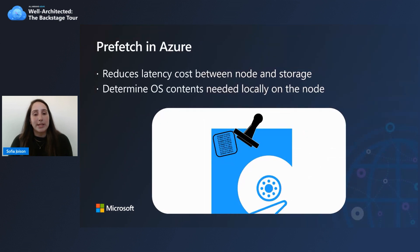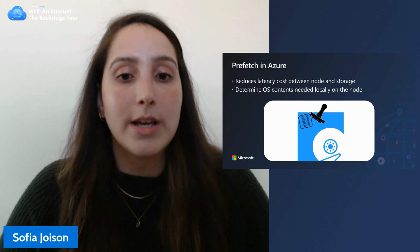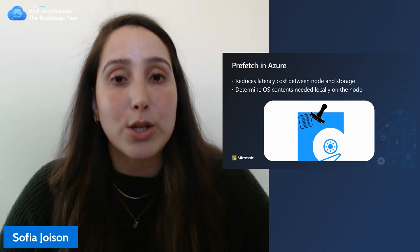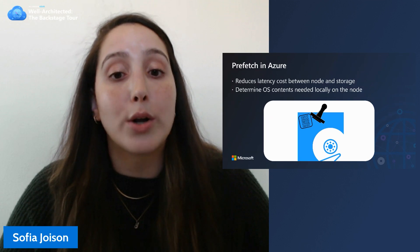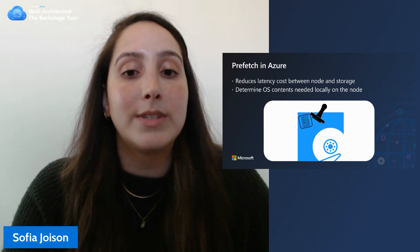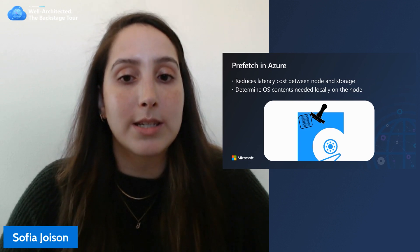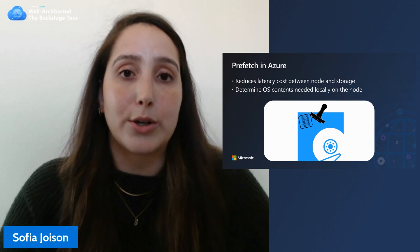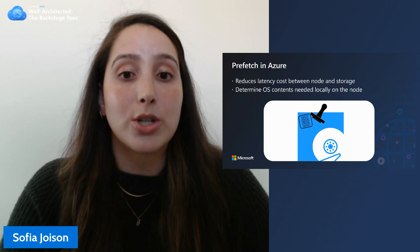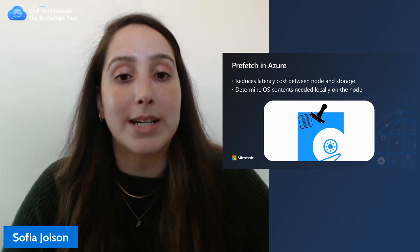The first optimization I want to talk about is prefetch. When Azure was beginning, we made the decision to put the OS disk on remote storage. That way, if there were any issues on the host node, we could spin up a VM on a new node and the user wouldn't be impacted by any loss of data. This additional reliability was a trade-off with performance. Of all the steps that occur in conventional resource provisioning, there's one specific step that takes the longest, and that is what we're going to optimize here.